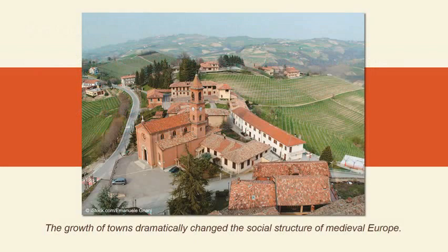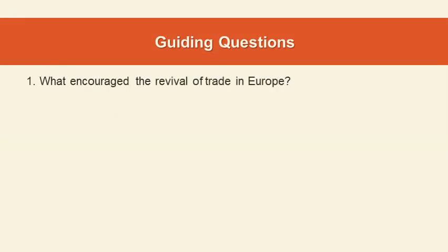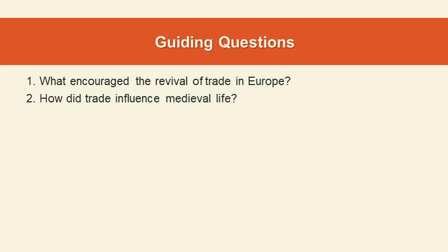Here's a picture of a European town, and these are going to grow and grow until we get to the modern city. We're going to move from a time of having trade outside of towns in fairs, but then those are going to become more and more stabilized as the towns grow. So the revival of trade is what we're looking at today. Here are the guiding questions for Section 1: What encouraged the revival of trade? How did trade influence medieval life? And what caused the growth of towns? We're going to look at the first two of those in this lecture.